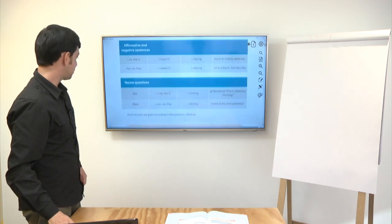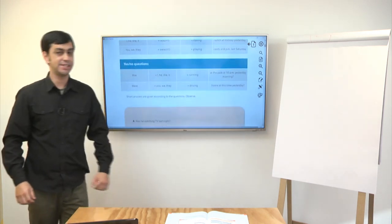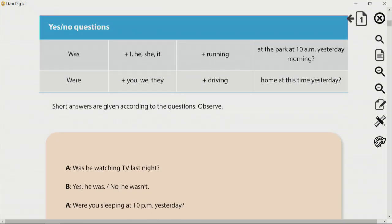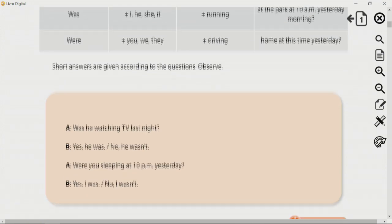Pra perguntas cuja resposta vai ser yes or no, eu vou usar essa estrutura aqui. Primeiro verbo to be, was ou were. Aí, o meu sujeito. Verbo com ing e aí o complemento. Então, no primeiro exemplo, eu tenho was, que eu posso usar com I, com he, com she, com it. Verbo com ing no final. E o complemento aqui. Was I running at the park at 10am yesterday morning? Com were. Were you driving home at this time yesterday? As minhas respostas pra essas perguntas seriam, yes I was, no I wasn't. Aqui, então, short answers.